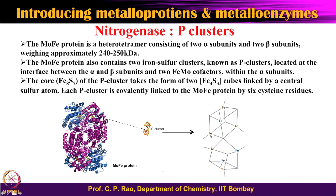The P cluster is not a freely suspended moiety in the protein; each iron is connected to a cysteinyl group. There are 8 cysteinyl groups in total — 4 from each Fe4S3 subunit. In contrast, the simple iron protein has an Fe4S4 cluster bounded by only 4 cysteinyl residues.